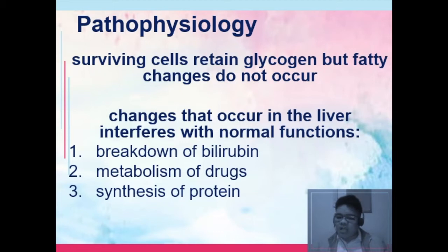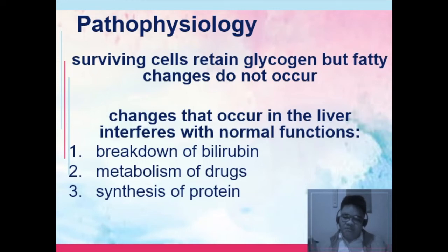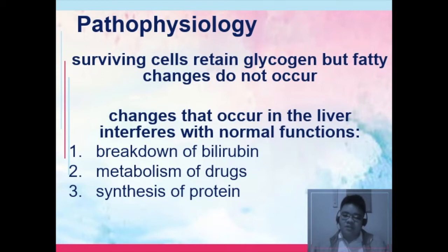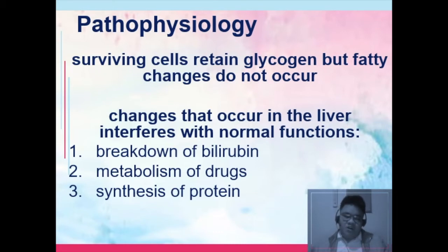The changes that occur in the liver interfere with normal function. Breakdown of bilirubin cannot be done properly, so bilirubin leaks into the system, causing jaundice — yellowish discoloration of the eyes. Regarding drug metabolism, we have what we call the hepatic first-pass effect. With liver breakdown, the liver will not be able to reduce the amount of medication that enters the body, resulting in reduced medication metabolism and increased risk for toxicity. There are also problems with synthesis of proteins, which later connects to fluid and electrolyte imbalances.